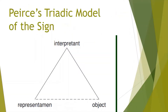Peirce defines a sign as something which stands to somebody for something else. As shown in the figure, for Peirce, a sign is made up of three parts: the representamen, the interpretant, and the object.